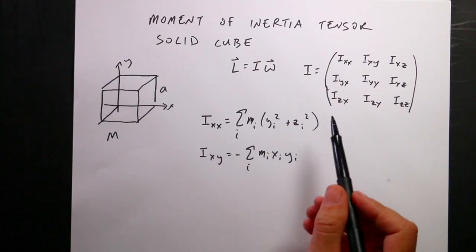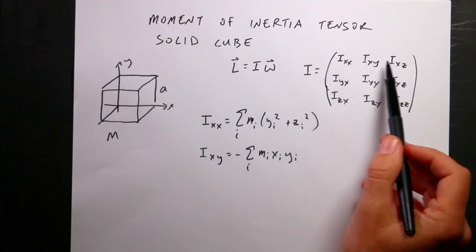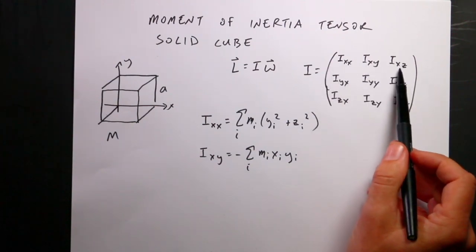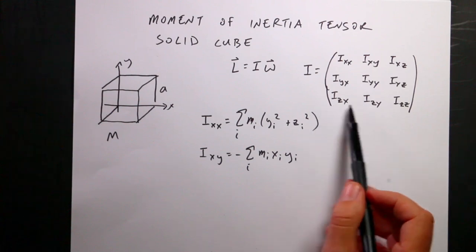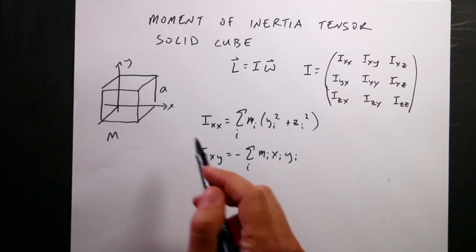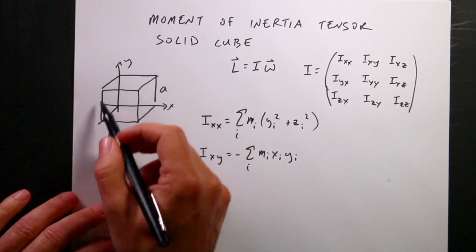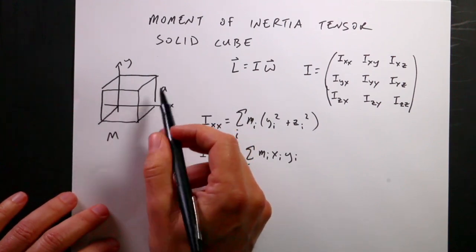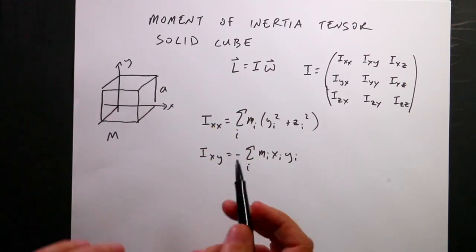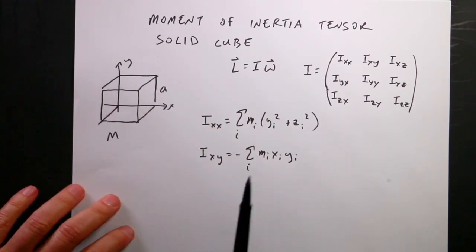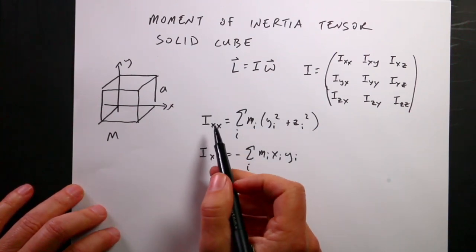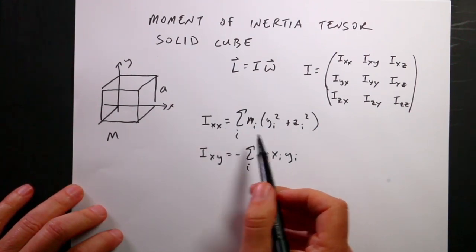The moment of inertia tensor has nine components: Ixx, Ixy, Ixz, and all the way down to Izz. We need to calculate each one of those for this cube — a cube with side length a and total mass m.